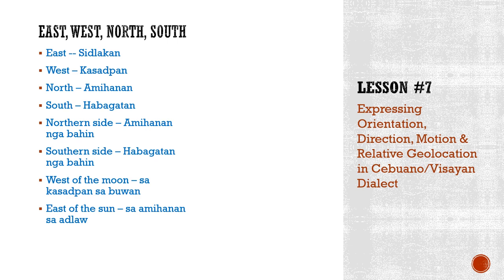If you say northern side or southern side, you can say amihanan nga bahin or habagatan nga bahin. West of the moon: kasadpan sa buwan — or bulan depending on region, buwan in Cebu, bulan in Mindanao. East of the sun: sa sidlaqan sa adlao. These references are kind of poetic.